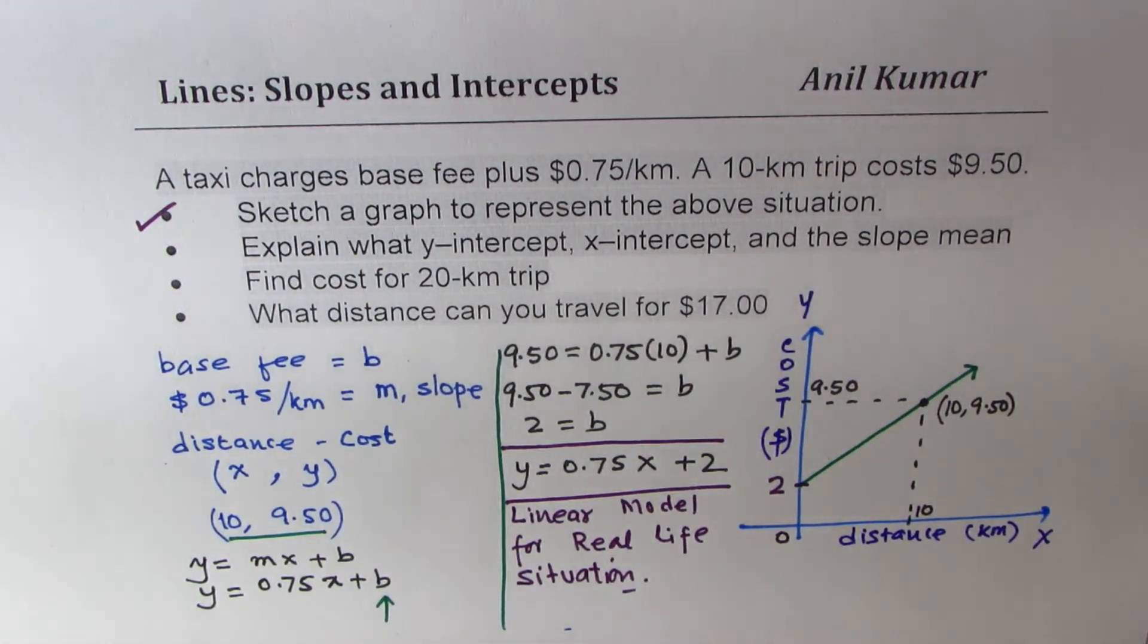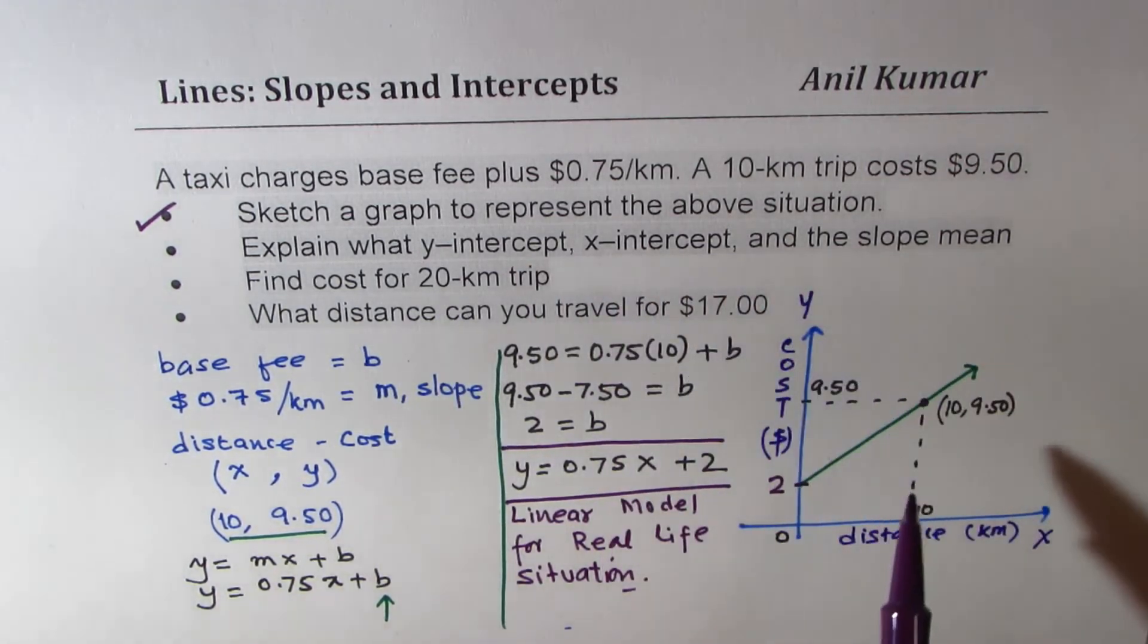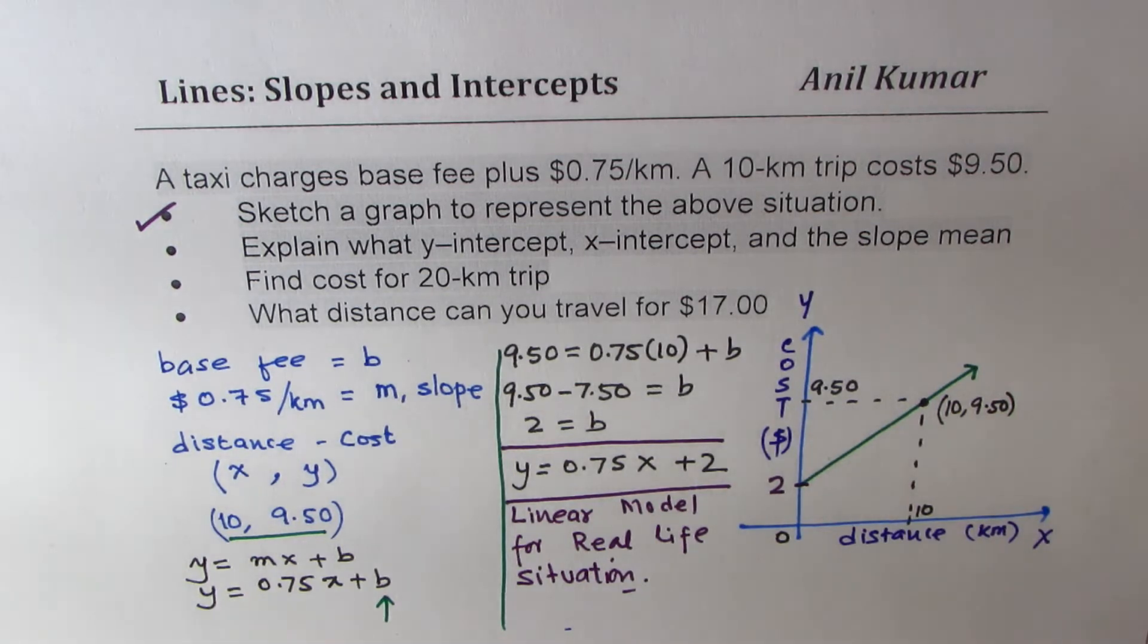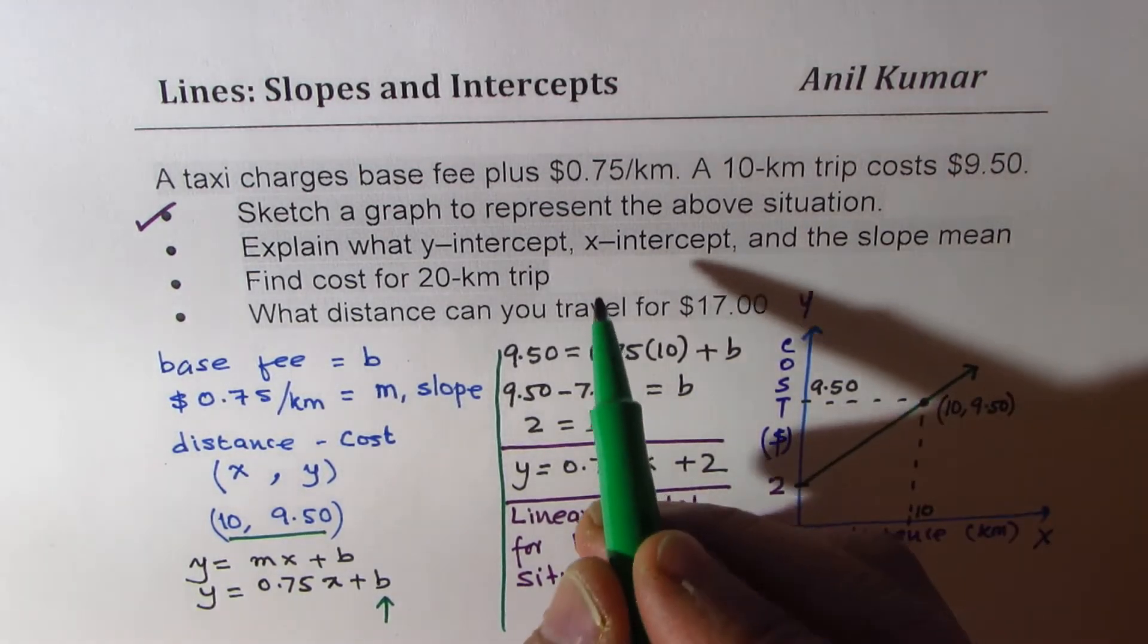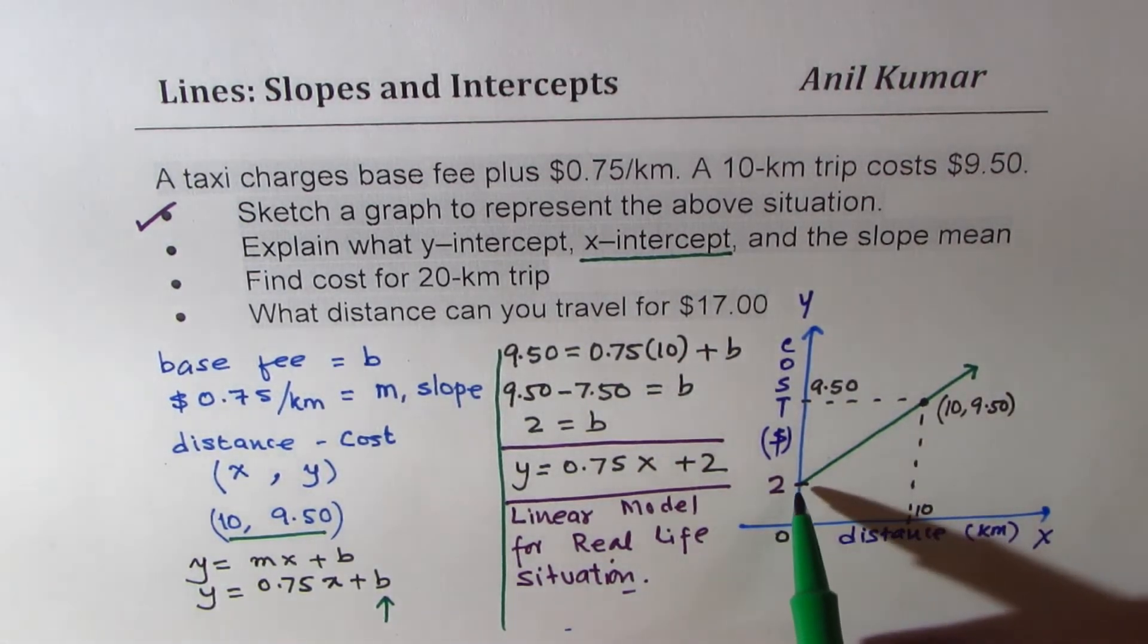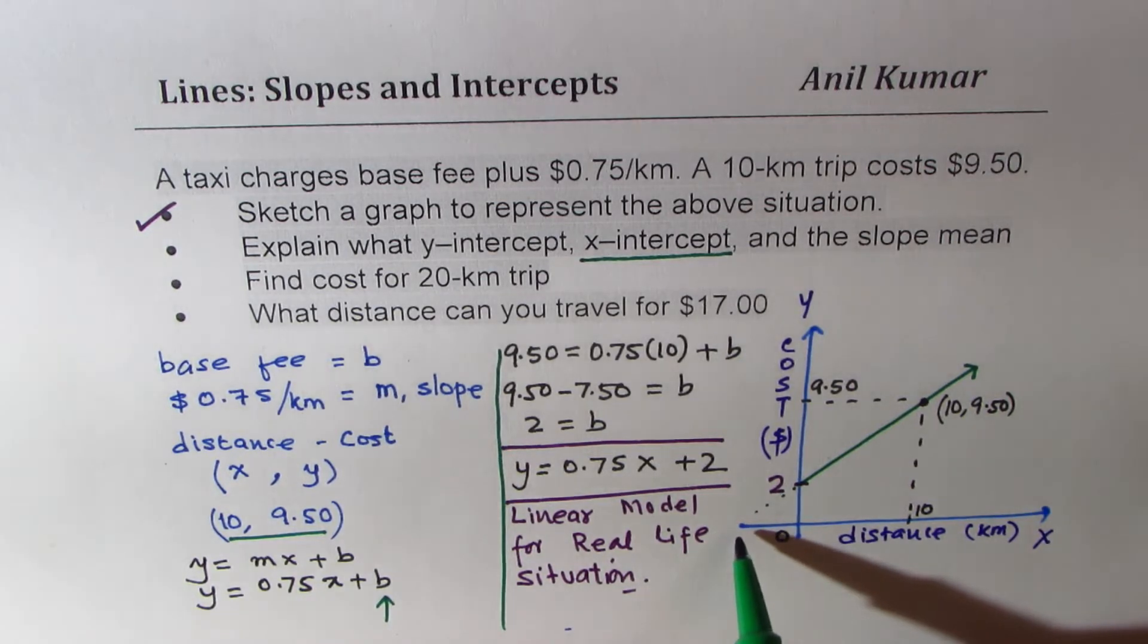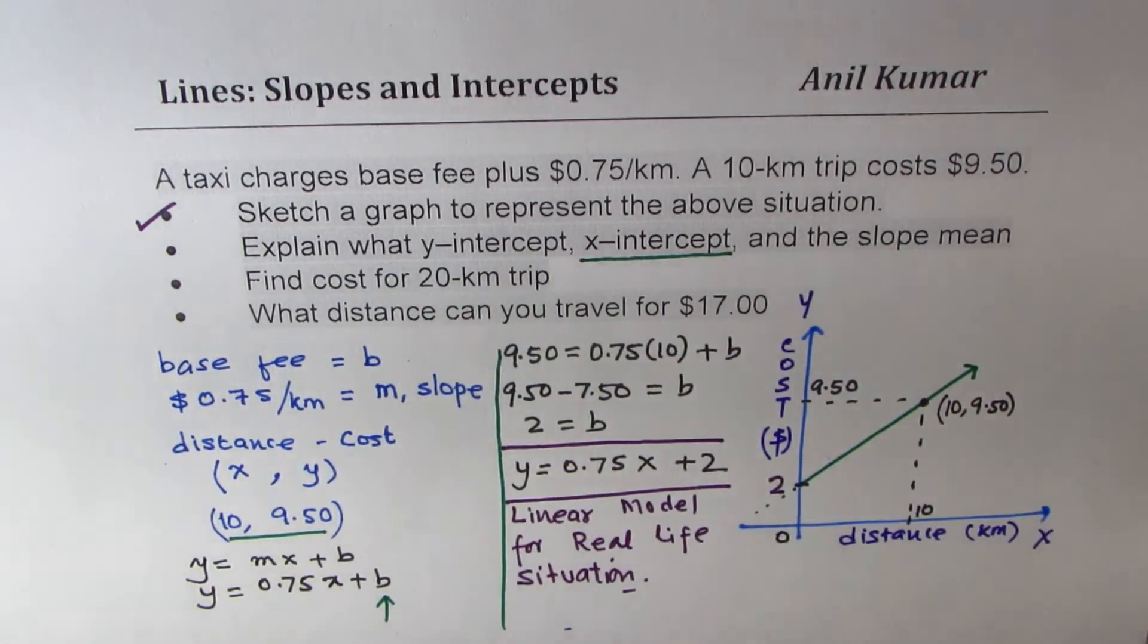So we have done the first part, and we found that this point should be $2. So that becomes our straight line. Now, we could actually explain x and y intercepts and slope from this diagram. What you see here is that we do not have any x-intercept, since there is a base price. The line does not cross the x-axis. We only have y-intercept.